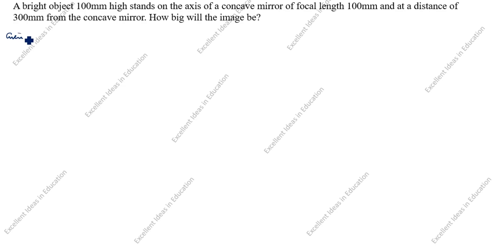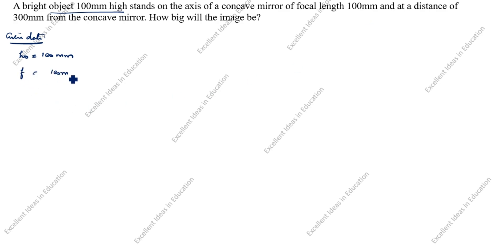What is given in this question? Given data: Object height HO is equal to 100 mm. The concave mirror has focal length F of 100 mm, but for a concave mirror, focal length is always negative. At a distance of 300 mm from the concave mirror, U is given as 300 mm. Object distance is always negative for lens and mirror.